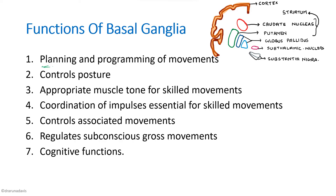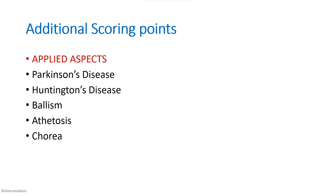This is a general outline of what you have to write when functions of basal ganglia is asked — you have to elaborate on each accordingly based on the marks allotted. We can also write some points about the applied aspects, like what happens when there are basal ganglia lesions. The most famous lesion is Parkinson's disease. You can also mention Huntington's disease, ballism, athetosis, and chorea. This will fetch you more marks.